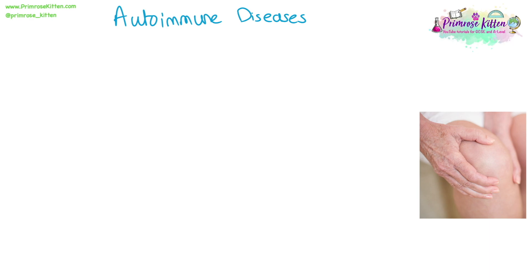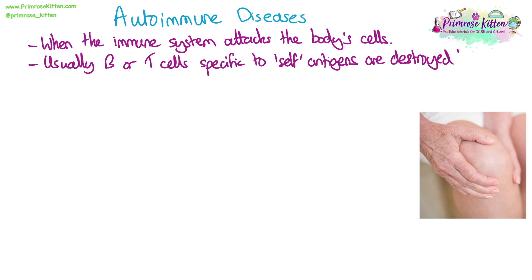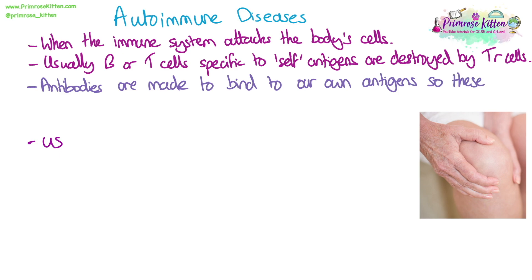Autoimmune diseases occur when the immune system attacks the body's own cells. This normally doesn't happen because B or T cells specific to self-antigens are destroyed by T regulatory cells, or their ability to release cytokines is suppressed. However, when these self-reactive cells remain active, antibodies are made to bind to the body's own antigens, and those body cells are then targeted for attack by the immune system.